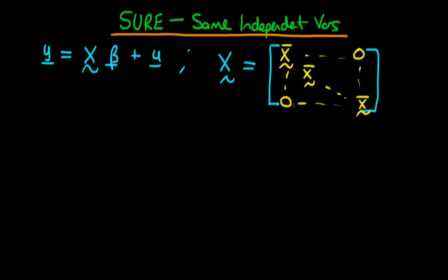In this video, we're going to see that in the circumstance where each of the individuals in our sample has the same right-hand side variables — the same independent variables — GLS estimation actually reduces to standard OLS. So there's actually no need to estimate a SUR system in the circumstance where each of the individuals in your sample has the same right-hand side variables.